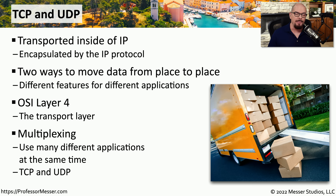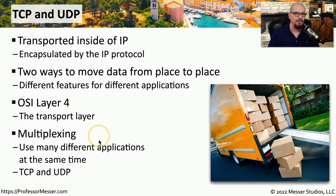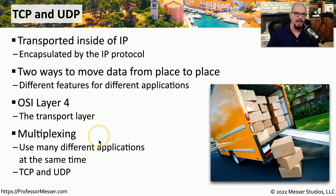You may think that IP is all you would need to be able to move data from one part of the network to the other, and in many ways you would be correct. But TCP and UDP add additional capabilities that IP can't provide. For example, these provide multiplexing so that you can have many different applications on your system communicating to a separate server simultaneously, and the server is able to determine what applications are in use through the use of this multiplexing.